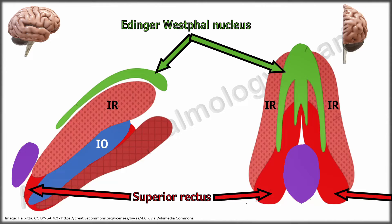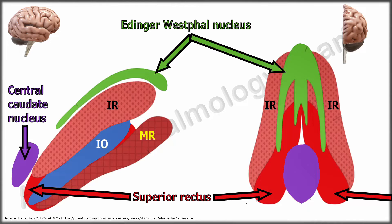The inferior oblique subnucleus lies in between the medial rectus subnucleus ventrally and the inferior rectus subnucleus dorsally. The central caudal nucleus is a single midline structure located at the caudal end of the oculomotor nucleus complex and supplies both levator palpebrae superiores muscles.